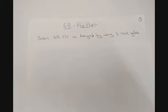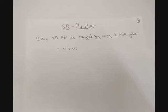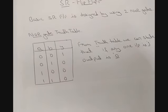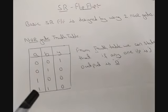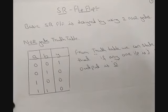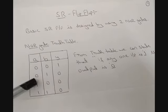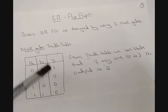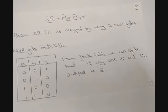The basic SR flip-flop is designed using two NOR gates. Looking at the NOR gate truth table: when the input is zero-zero, that is zero plus zero, the output is one since it is a NOR gate. The key statement from this truth table is: if any one of the inputs is one, the output is zero.